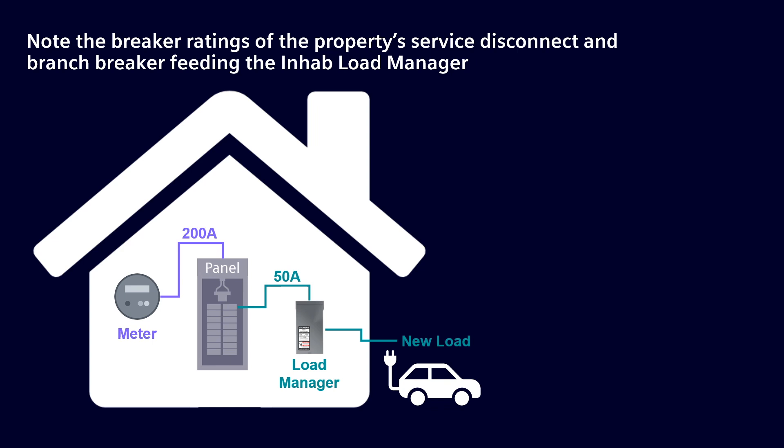For this example, we will assume a property that has a 200-amp service disconnect and a 50-amp branch breaker feeding the NHAB Load Manager. Our system will be sized considering continuous operation of the electrical system.